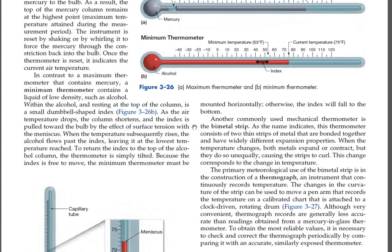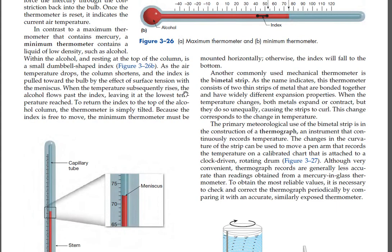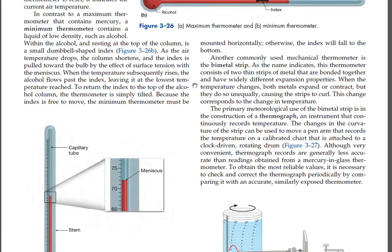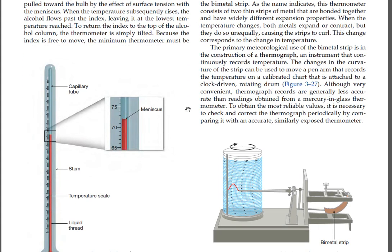Another commonly used mechanical thermometer is the bimetal strip. This thermometer consists of two thin strips of metal bonded together that have widely different expansion properties. When the temperature changes, both metals expand or contract but do so unequally, causing the strips to curl — this change corresponds to the change in temperature. The primary meteorological use of the bimetal strip is in the construction of a thermograph, an instrument that continuously records temperature. The changes in the curvature of the strip can be used to move a pen arm that records the temperature on a calibrated chart attached to a clock-driven, rotating drum.